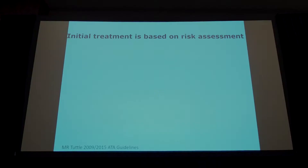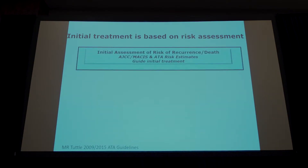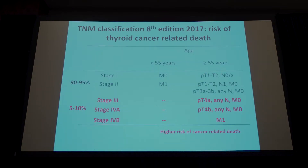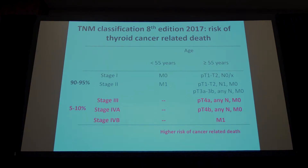We can rely on risk stratification. Risk of death can be estimated by the TNM classification, and risk of recurrence can be estimated by the ATA risk stratification. In this new TNM classification, most cancer patients are low risk — very few patients have extended disease or distant metastases with high risk of cancer-related death, representing no more than 5 to 10% of all thyroid carcinoma patients. Patients with node metastases are classified as low risk, at least for death.